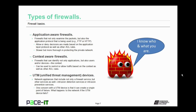There are also context-aware firewalls. These are firewalls that can identify not only applications, but also users and/or devices — this is the context of the traffic. Context-aware firewalls can be used to restrict or allow traffic based on the context, as well as other ACL rules.